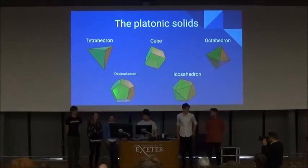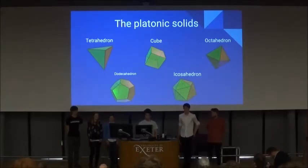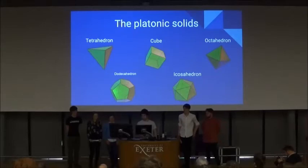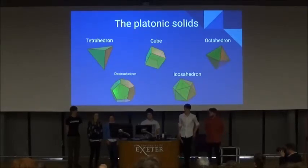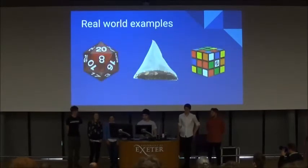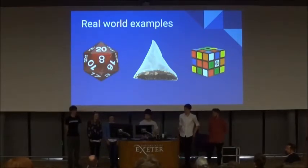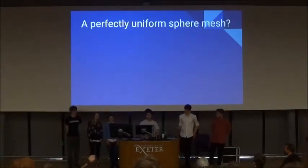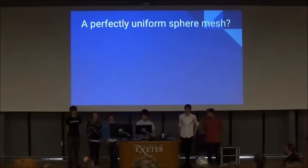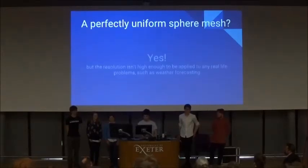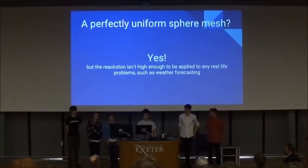But you can find them in tetrahedrons, which is like a pyramid, but with a triangular rather than square base. A cube, like a dice. An octahedron, like a dice. So, do they form a perfectly uniform mesh of a sphere? Yes, they absolutely do, but the resolution is too low to be used for anything.